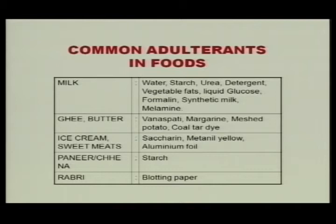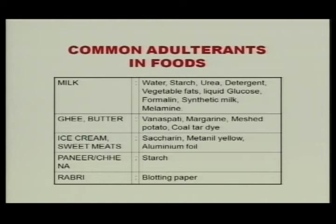Let us see what are the common adulterants in food. Mostly adulteration is done in common food like milk — it is done mostly in milk sold loose. Water is the most common adulterant. Addition of water many times makes milk unsafe because water may be used from ponds, taps, or even tube wells. Fecal matter or foreign matter makes milk unsafe, as milk is consumed mostly by children or even infants.